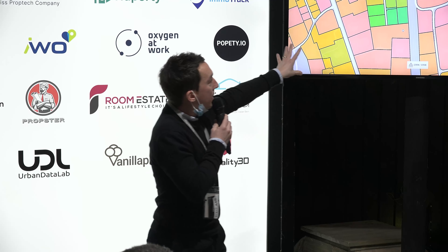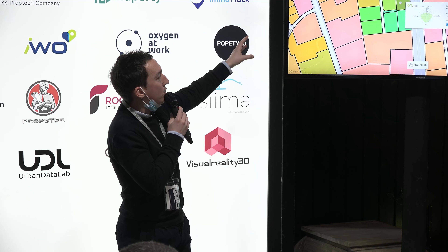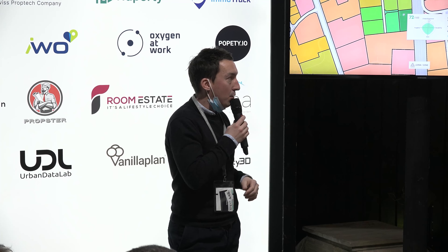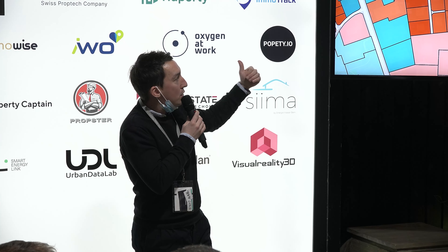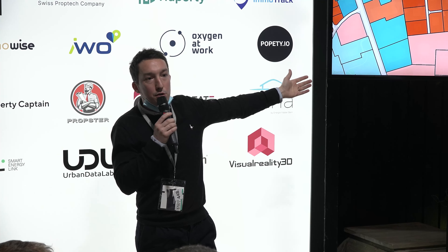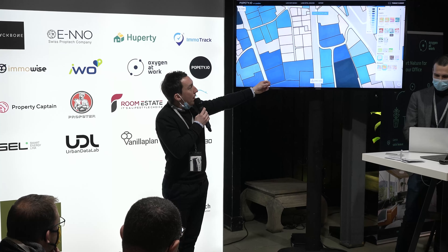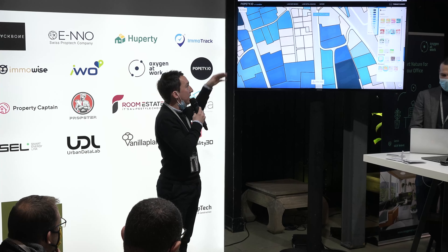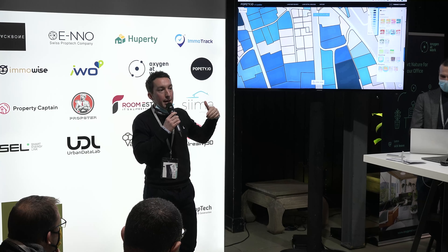If we zoom into this zone, for example, we can see some plots of land with high potential surrounded by plots with low potential. Looking at other thematic maps, we can also show information about the construction of buildings — we can see a whole construction building in the middle. Looking at the number of housing units, we can see single family houses in the center surrounded by multifamily apartments.